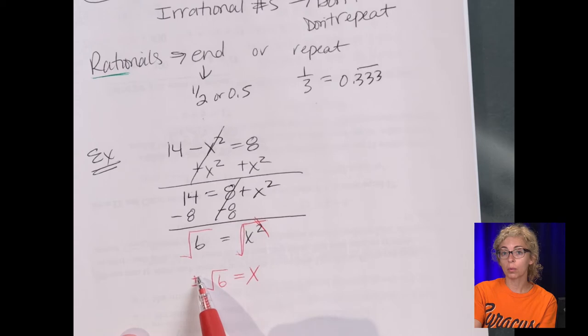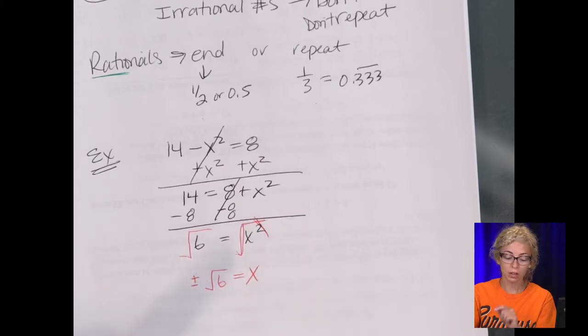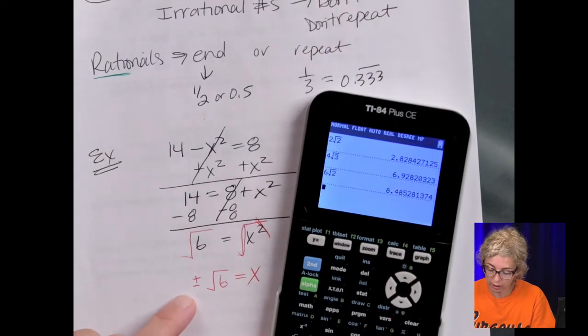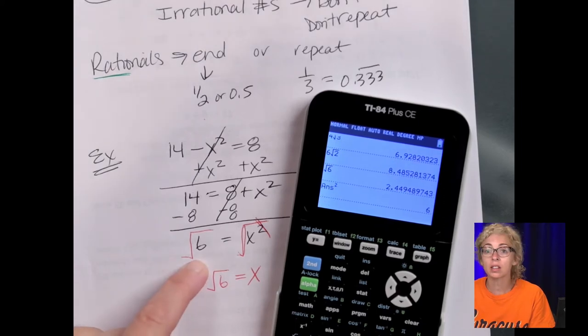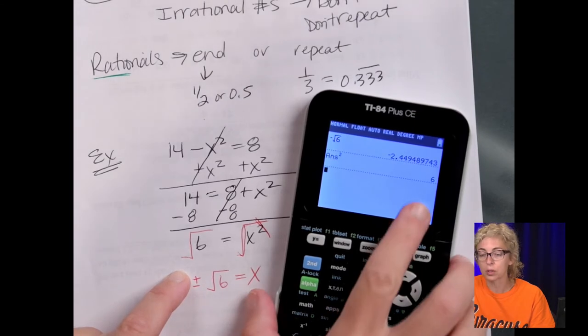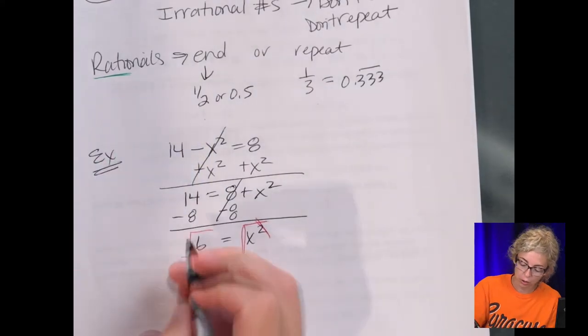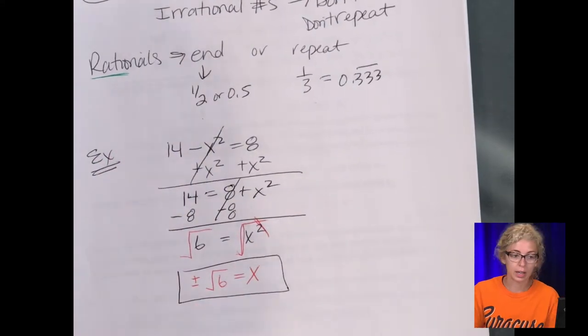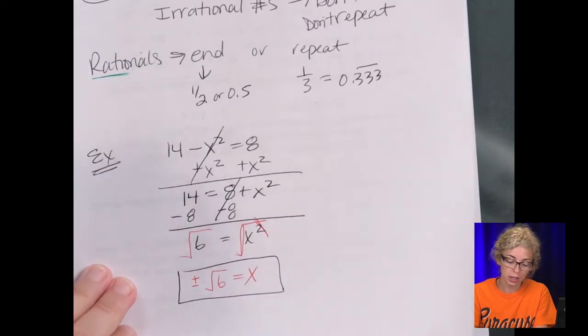Because we know that when we square negative or square positive, we end up with the radical. So if I wanted to check the square root of 6, take that and square it. We do get 6. Good. Square root of, actually we want the negative square root of 6. Square that and we also get 6. So you see they both work. So you want to make sure you include that plus or minus.